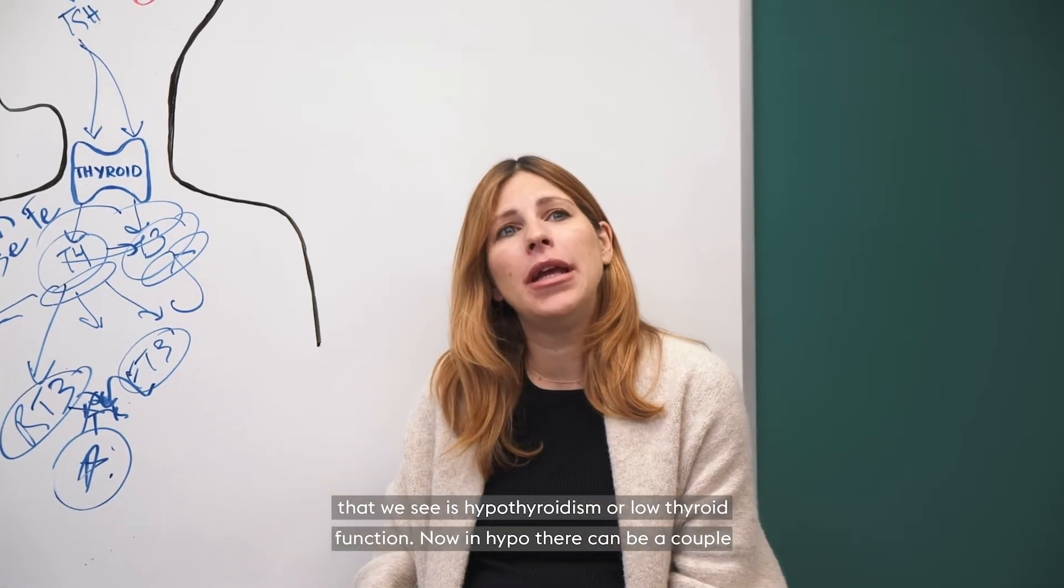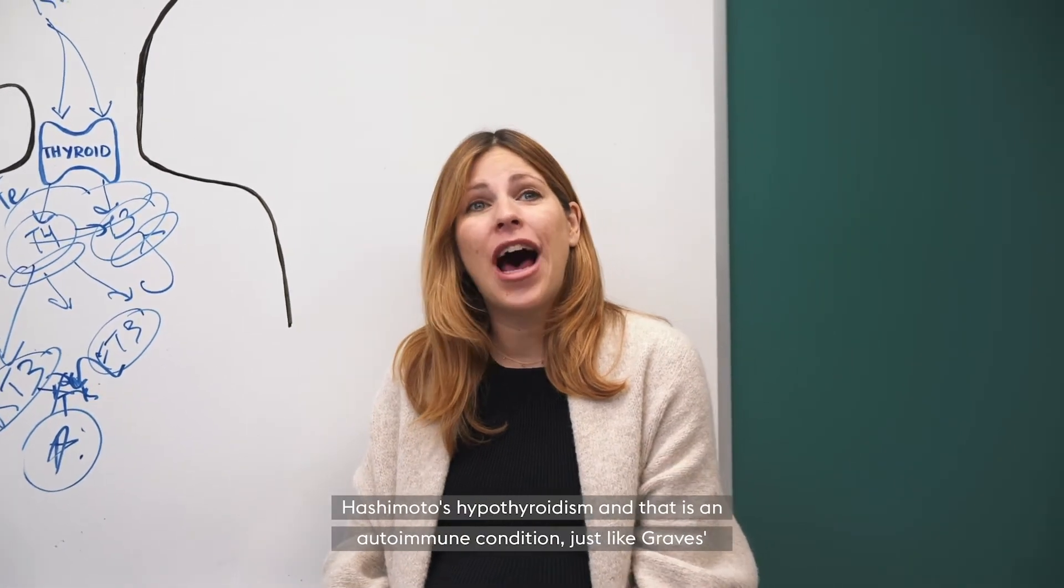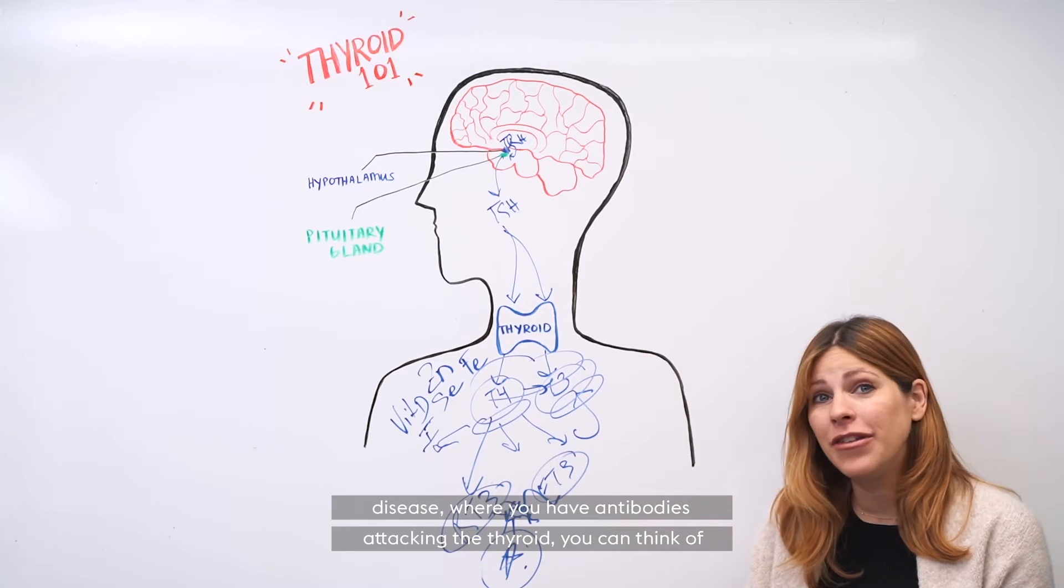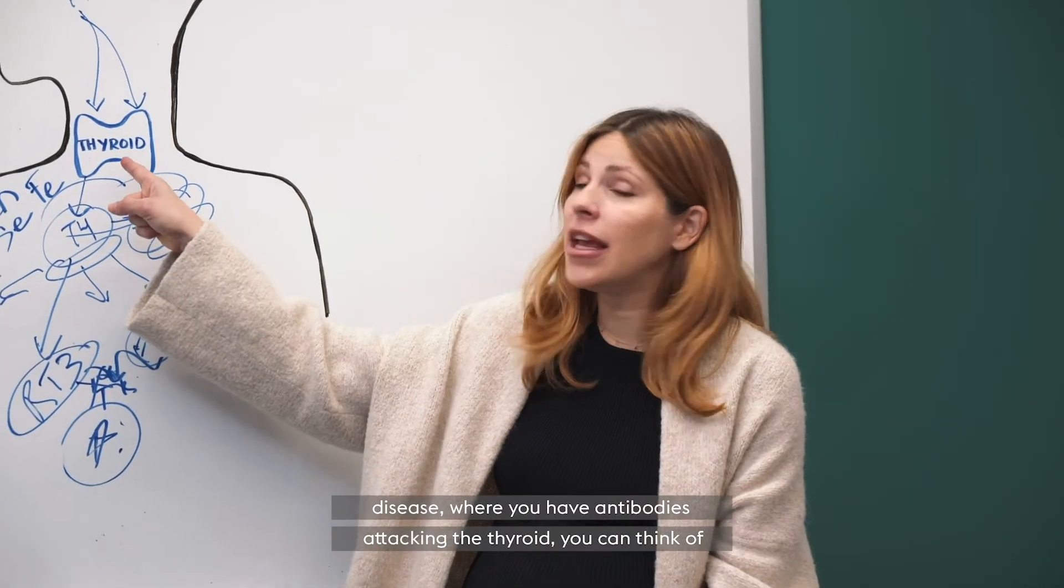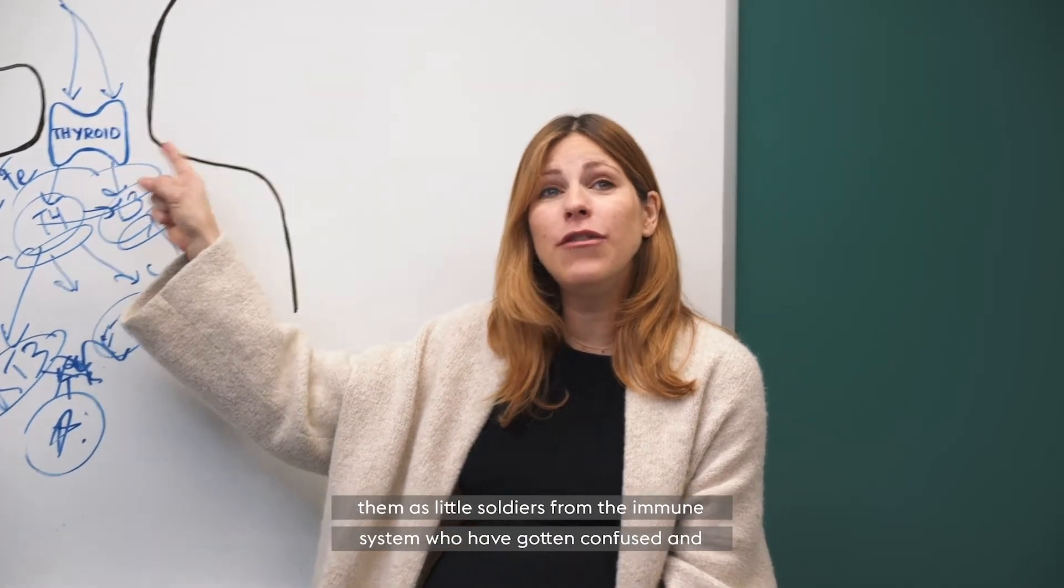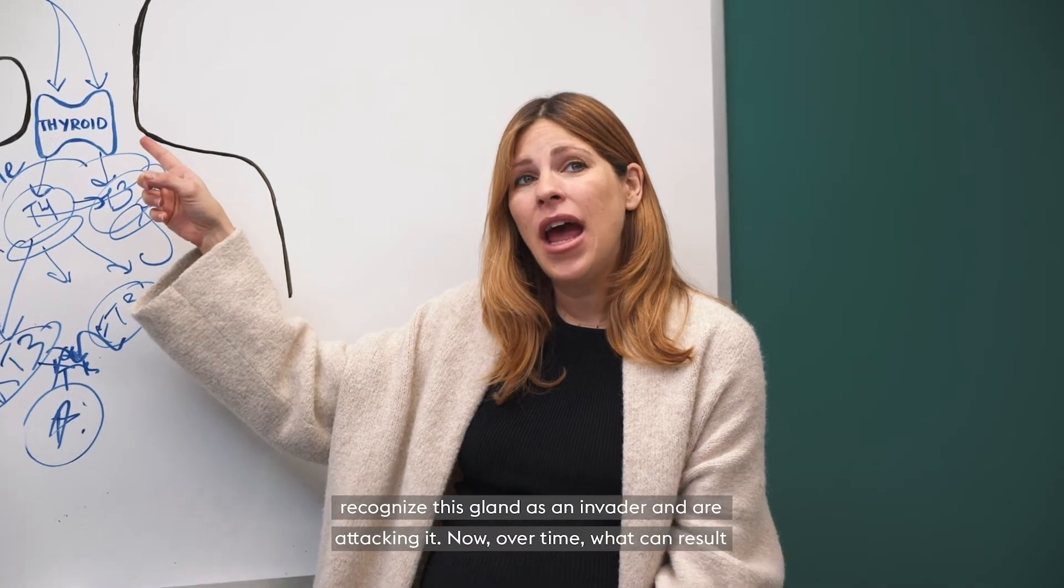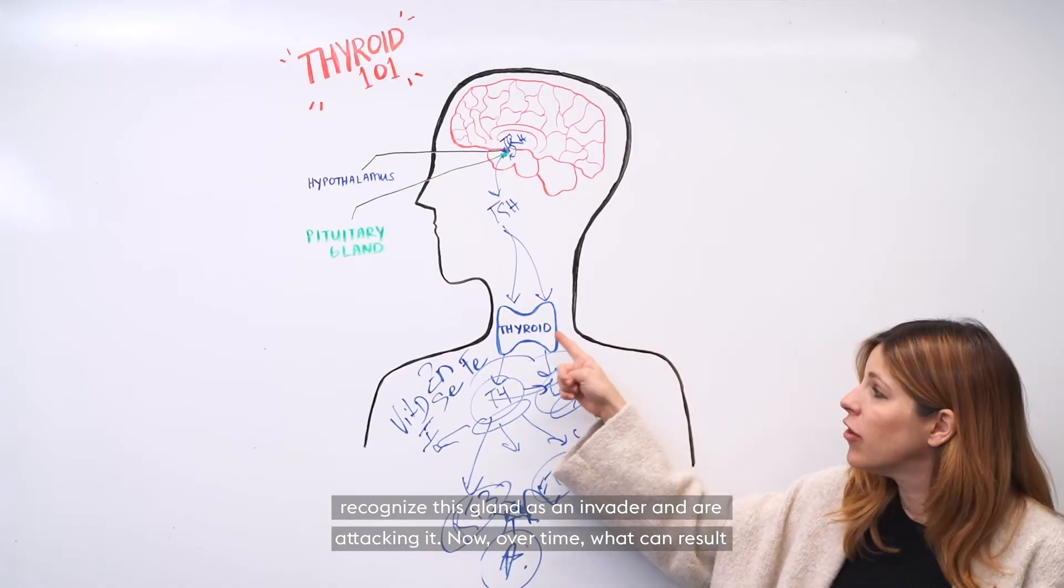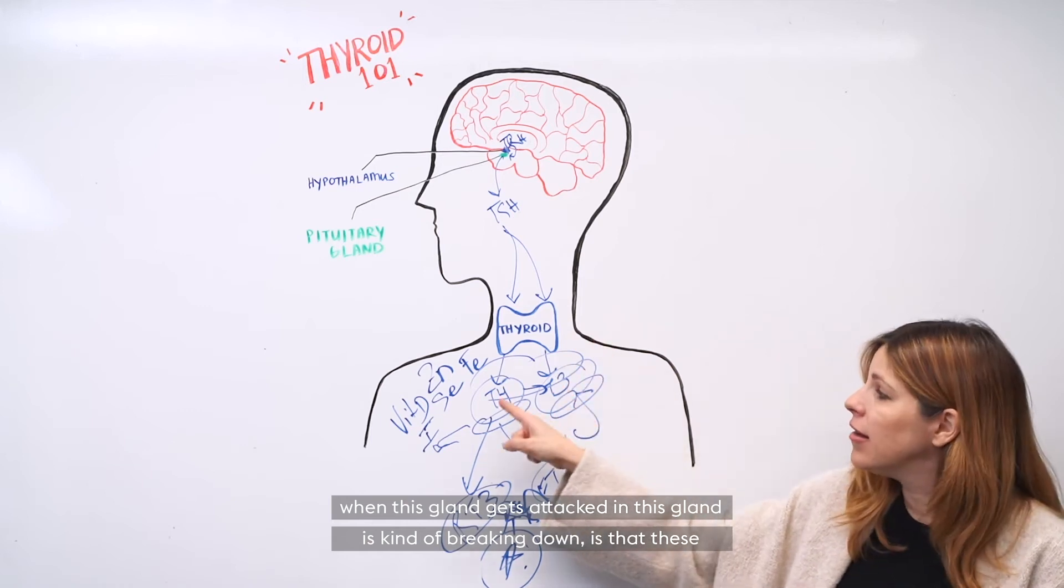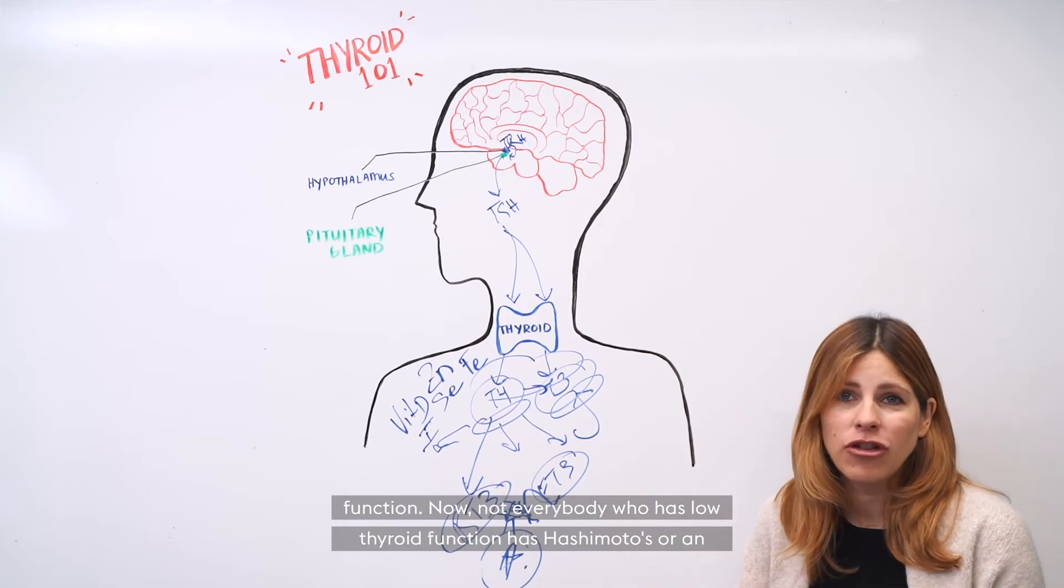Now in hypothyroidism, there can be a couple of causes. The majority of people with hypothyroidism have something called Hashimoto's hypothyroidism. And that is an autoimmune condition, just like Graves' disease, where you have antibodies attacking the thyroid. You can think of them as little soldiers from the immune system who've gotten confused and recognize this gland as an invader and are attacking it. Now over time, what can result when this gland gets attacked is that these hormones don't get produced and you end up with lower and lower levels of thyroid function.